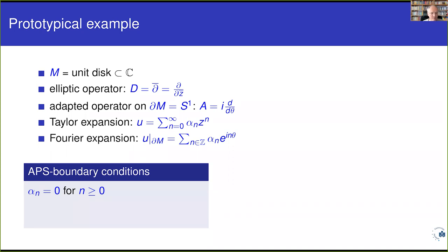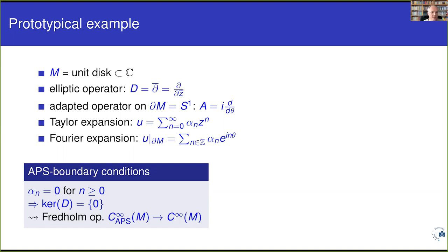In the particular case where the function on the boundary is the restriction of a holomorphic function on the disk, negative Fourier modes do not appear anyway, because the Taylor expansion has only non-negative powers of z. So the Fourier expansion of the restriction will only have contributions from non-negative n. If we set all those equal to zero, then the kernel under these boundary conditions is actually trivial, and you get a Fredholm operator.